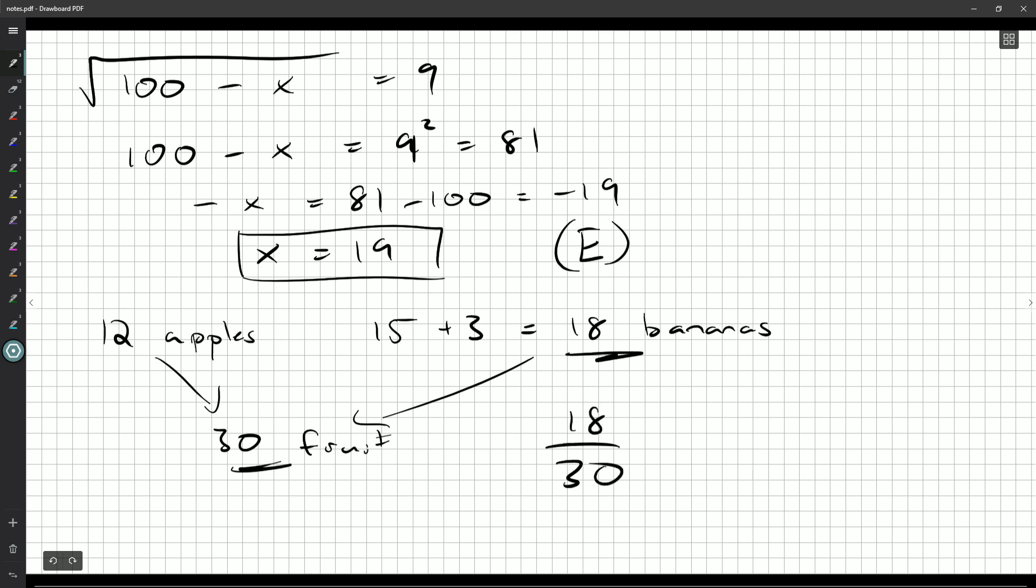Now, none of the answers are 18 over 30, but that's because we've got some common factors on top and bottom. If we divide by six, we'll get a three on top and a five on bottom. And that's the answer we seek.